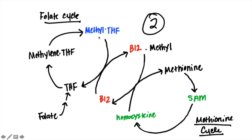One more important point about the folate cycle: it's also essential for the creation of purines and pyrimidines — I didn't include this on the diagram to keep it simple, but it's really important. So B12 and folate are not only important in creating methionine, SAM, and homocysteine, but they're also critical for the creation of purines and pyrimidines, and thus for DNA synthesis.